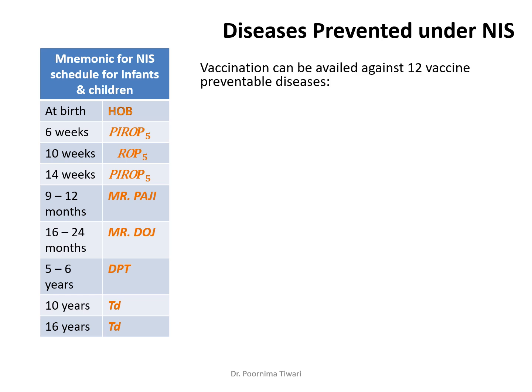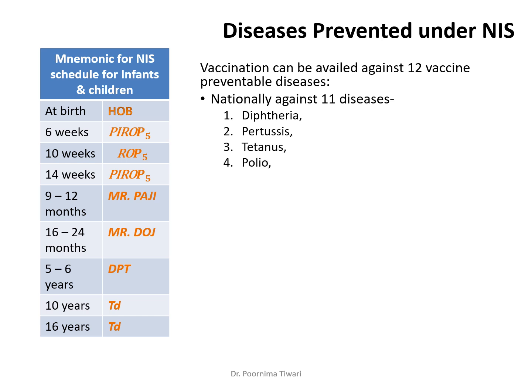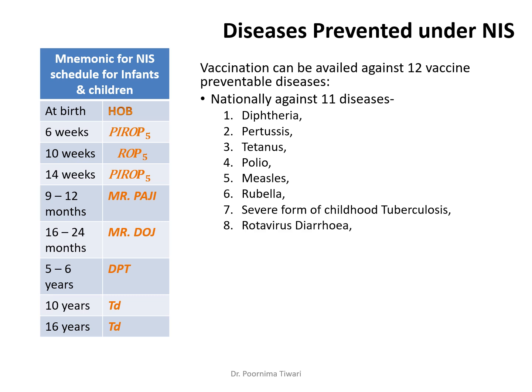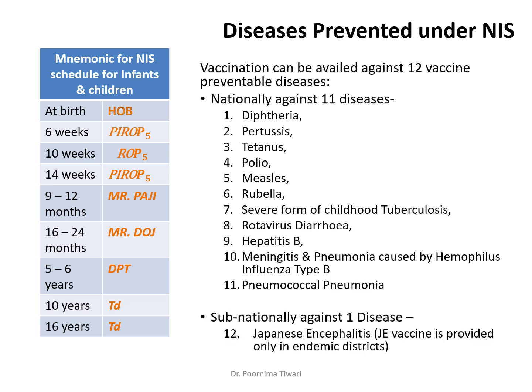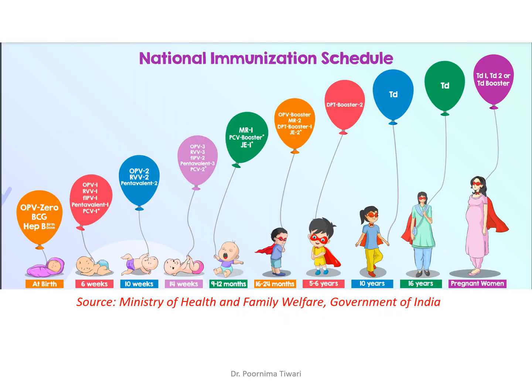The national immunization schedule covers 12 diseases in total — 11 diseases are covered on a national basis, while Japanese Encephalitis is given only in endemic districts. This is the visual representation provided by the Government of India for the national immunization schedule.